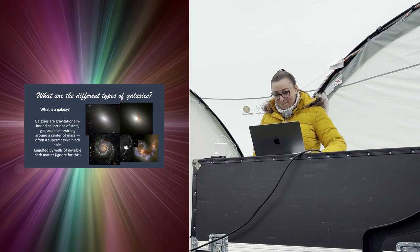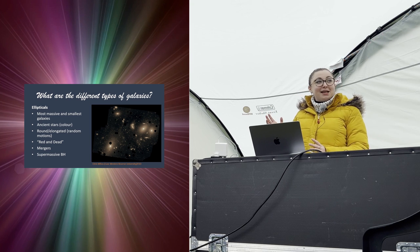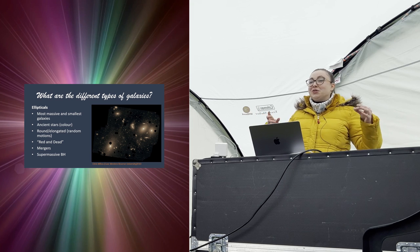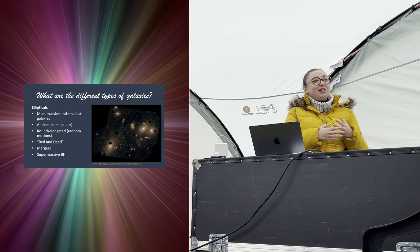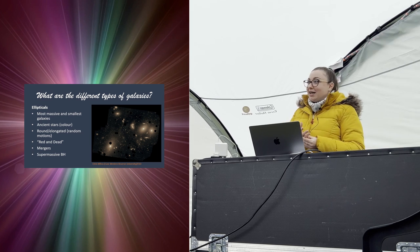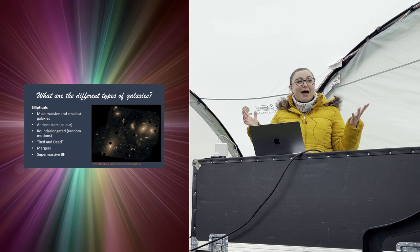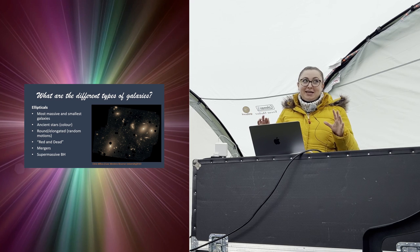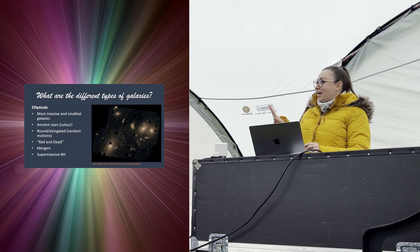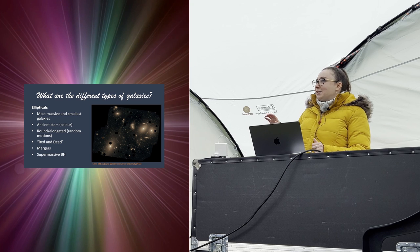Starting with ellipticals: they are both the most massive and the smallest galaxies — they span the whole mass range. You can get elliptical galaxies that are little more than balls of stars, barely more than globular clusters, and then we also have the most massive giant elliptical galaxies, which could swallow 60 or 80 Milky Ways and still have room left over.